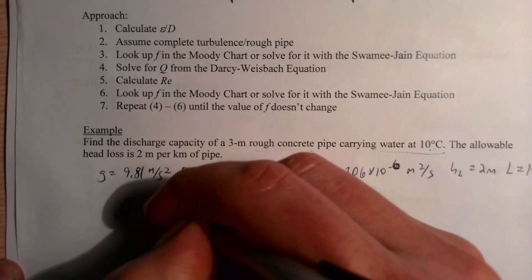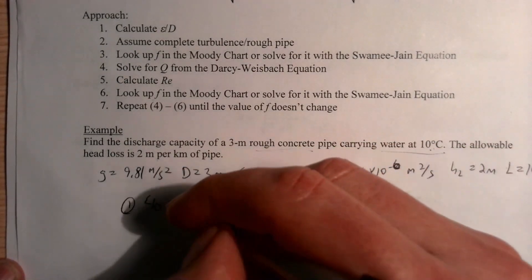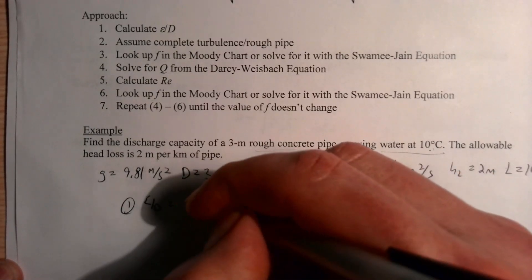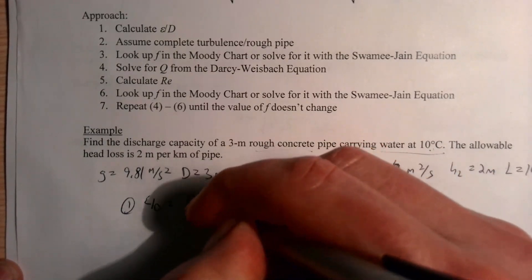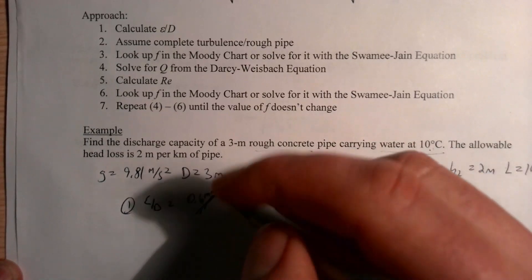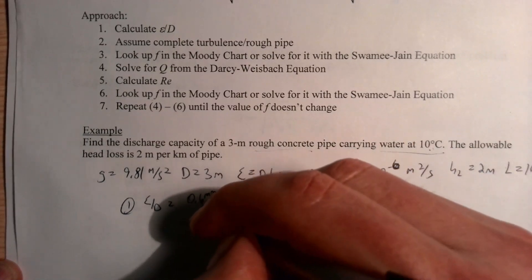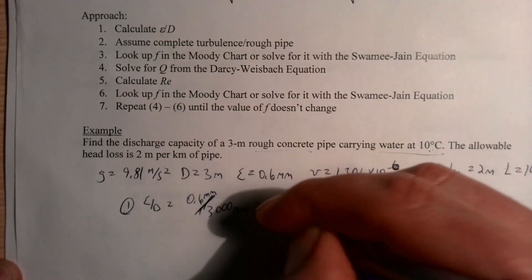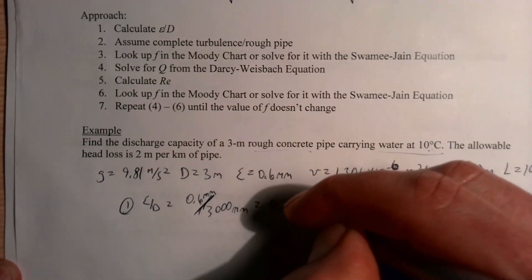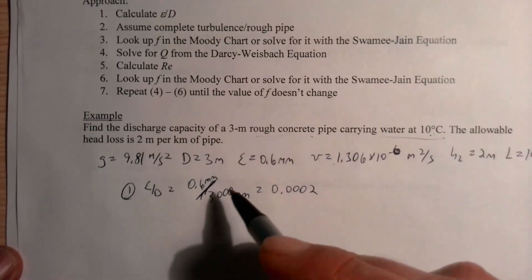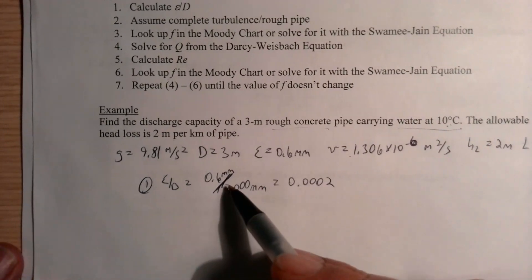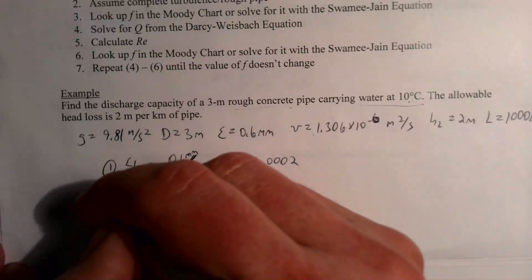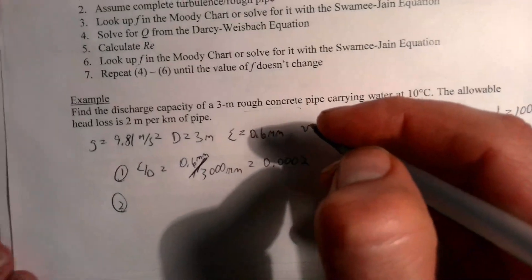Step one: get the relative roughness. From our supplemental data file, the roughness height for rough concrete pipe is ε = 0.6 mm. So ε/D = 0.6 mm / 3000 mm = 0.0002 (dimensionless).